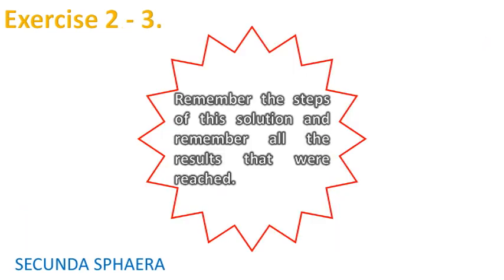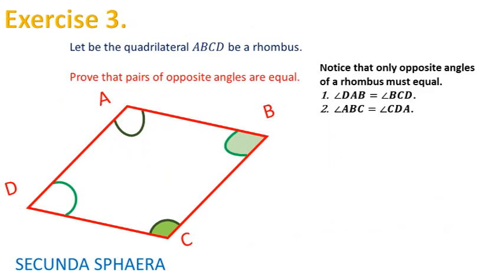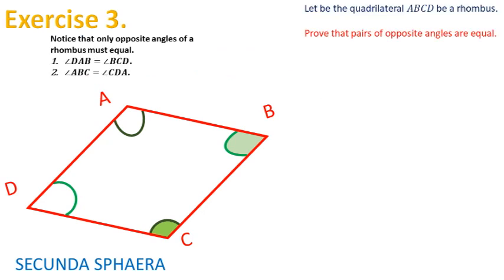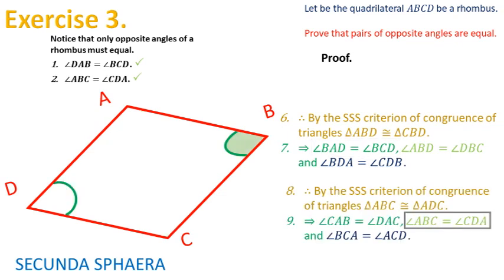Before commenting the solution for the third problem, I recommend remembering the results obtained on the former problem. The third problem states: let the quadrilateral ABCD be a rhombus, and asks to prove that its pairs of opposite angles are equal. It is useful to remember the results from the former problem: the angles BAD and BCD are equal, giving one equality required for this problem, and the angles ABC and CDA are equal, finishing this problem.